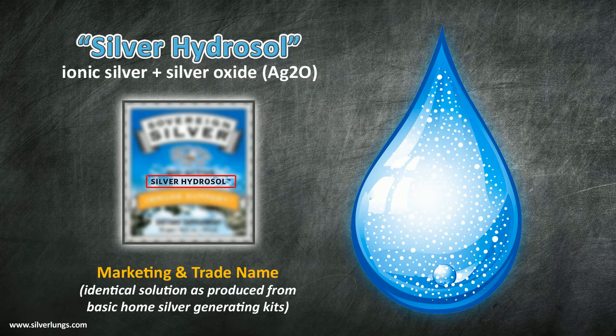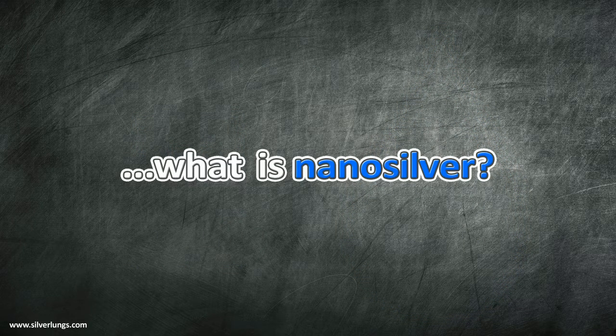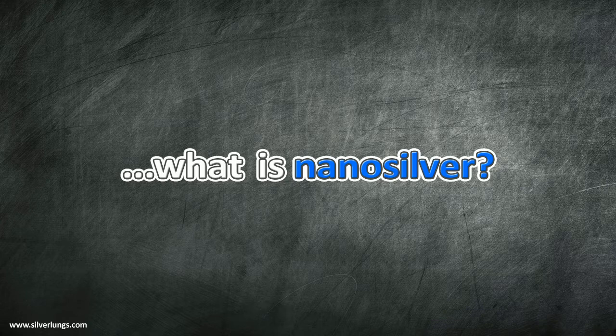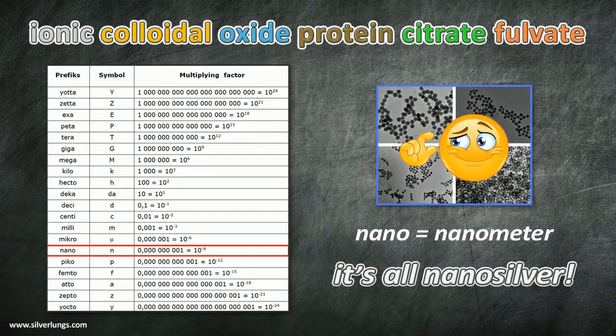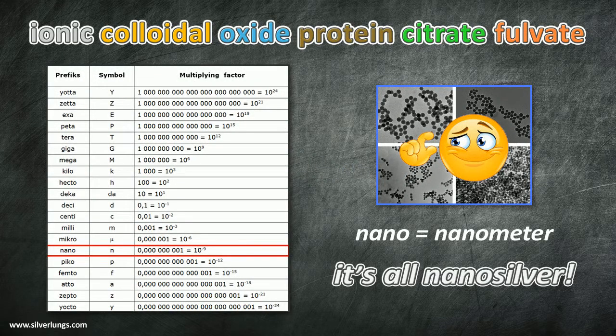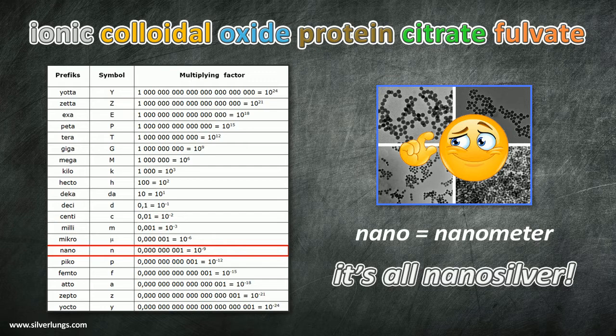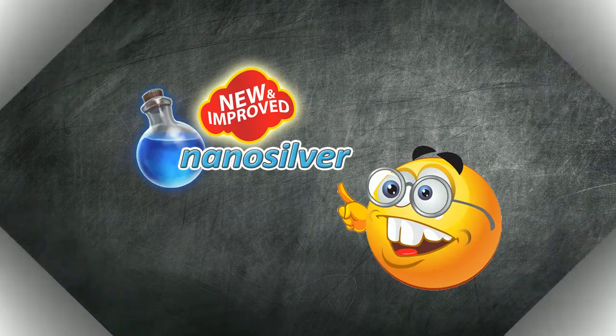Finally, we come to the latest craze in the silver solution market called nano-silver. In a previous video titled What is nano-silver? I provided a detailed account of the origin of this term and how the name gained popularity in recent years. In short, I explained how and why all silver solutions on the market qualify as nano-silver and that nano-silver is just the latest marketing term used by some silver solution manufacturers to imply this to be a new form of silver.